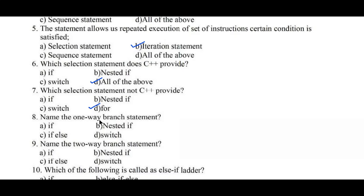Question number eight: name the one-way branch statement. Options: A: if, B: nested if, C: if-else, D: switch. One-way branch is a simple if statement, hence option A is the right answer. Question number nine: name the two-way branch statement. Options: A: if, B: nested if, C: if-else, D: switch. Option C, if-else, is the two-way branching statement.